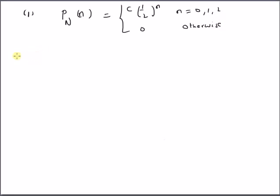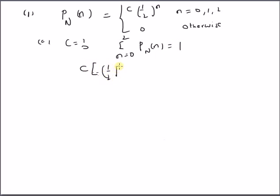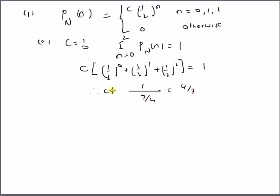Our first goal is to find the value of the constant c. From probability laws, we know the total probability is always equal to 1, that is summation from n = 0 to 2 of p_N(n) = 1, which gives c times (1/2)^0 + (1/2)^1 + (1/2)^2 = 1. This is 1 + 1/2 + 1/4, which totals 7/4, so c = 4/7.